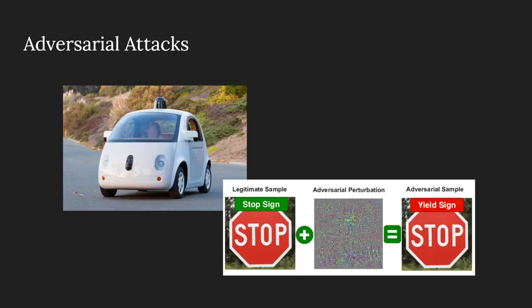An adversarial attack means an action that aims to cause a misbehavior of a machine learning system. As an example, let's look at a self-driven car. What if someone can alter road signs with some stickers and the computer vision algorithm of the self-driven car cannot recognize those signs? Then definitely it's going to be a huge problem. This is an example of an adversarial attack identified by researchers.